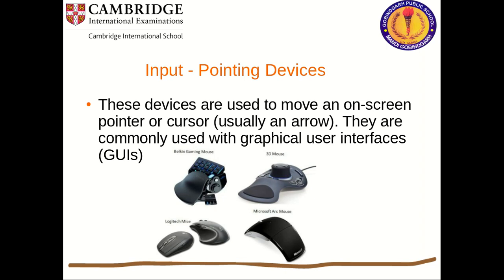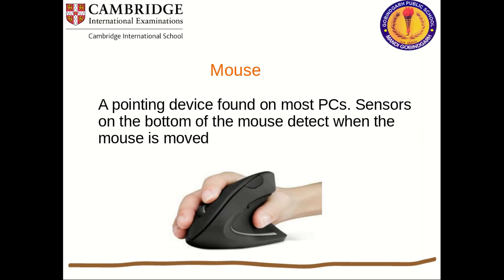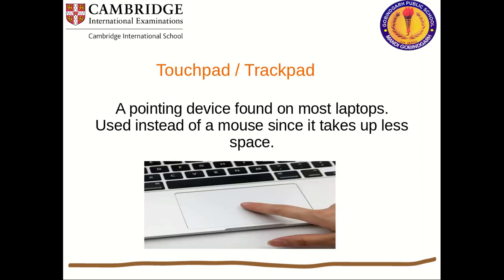The mouse is a pointing device found on most PCs. Sensors on the bottom of the mouse detect when the mouse is moved. We mostly use it with desktop PCs. Laptops have a touchpad built in, but we can externally attach a mouse for more comfortable use. The sensor at the bottom senses the movement of the cursor.